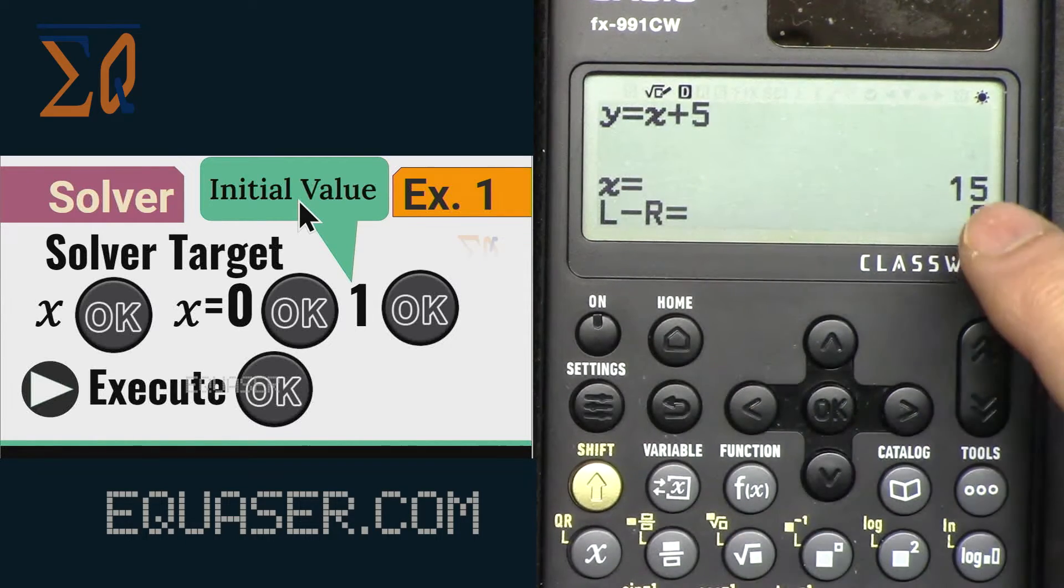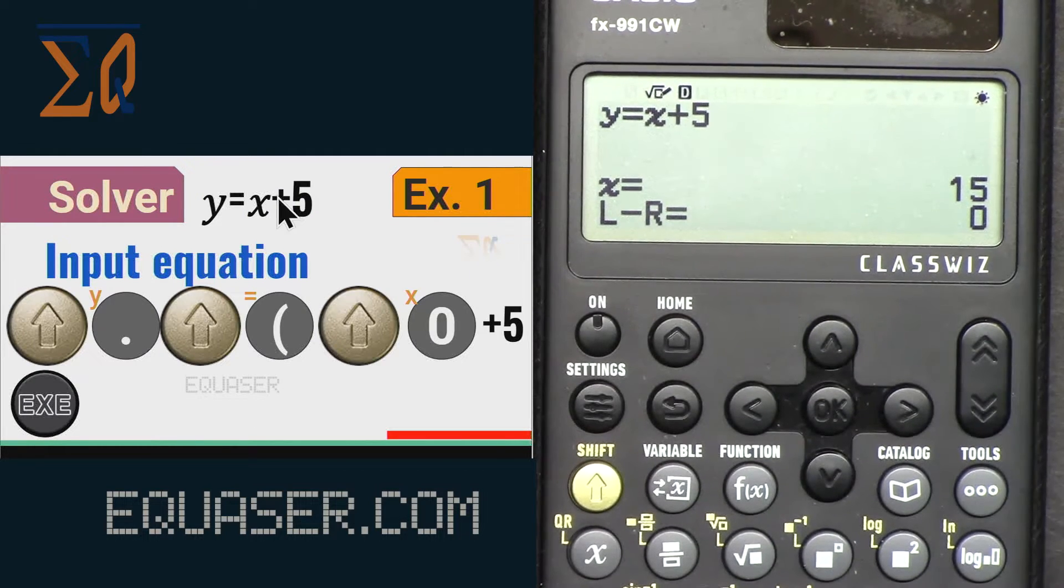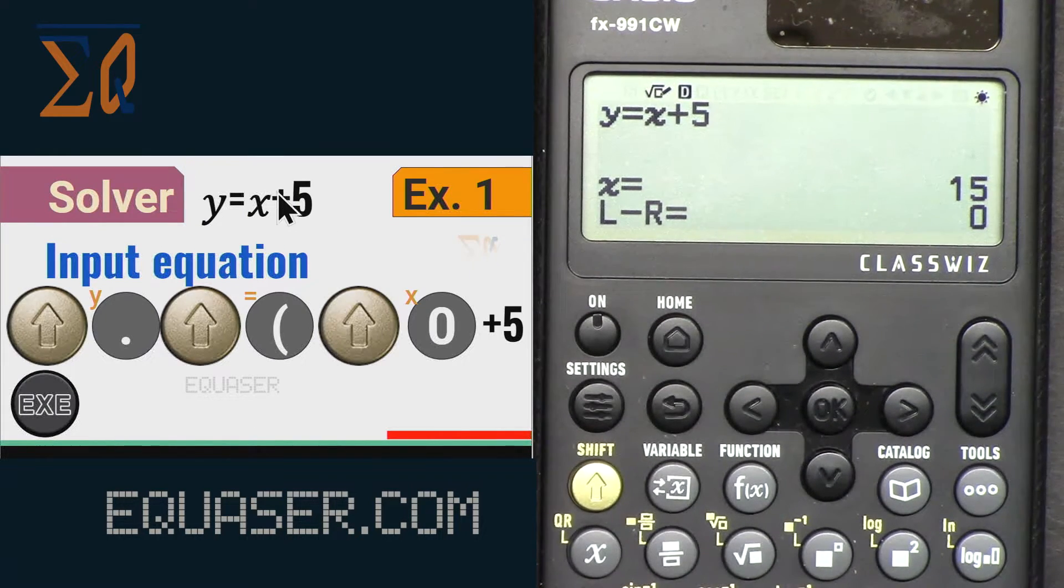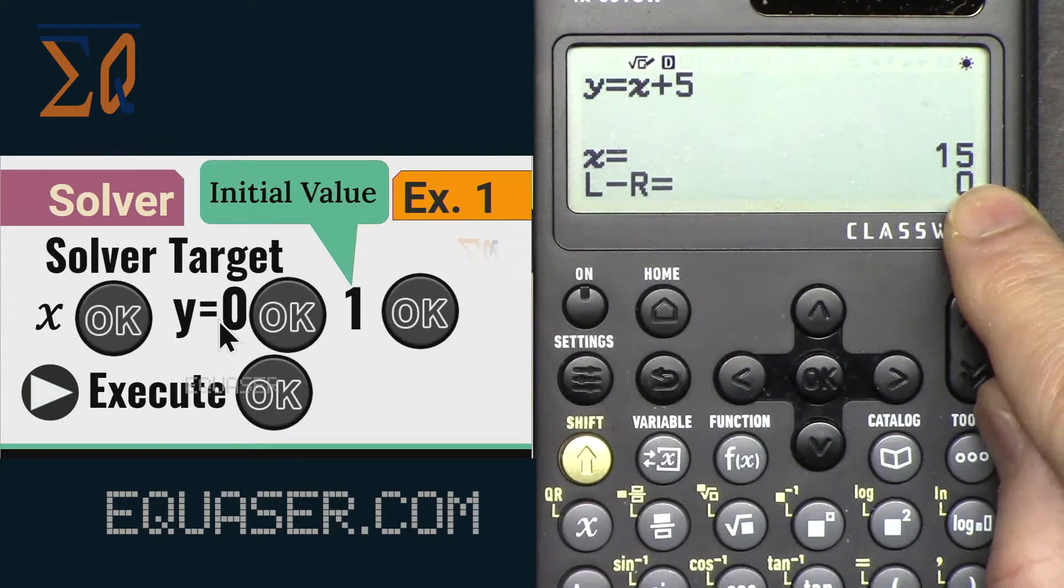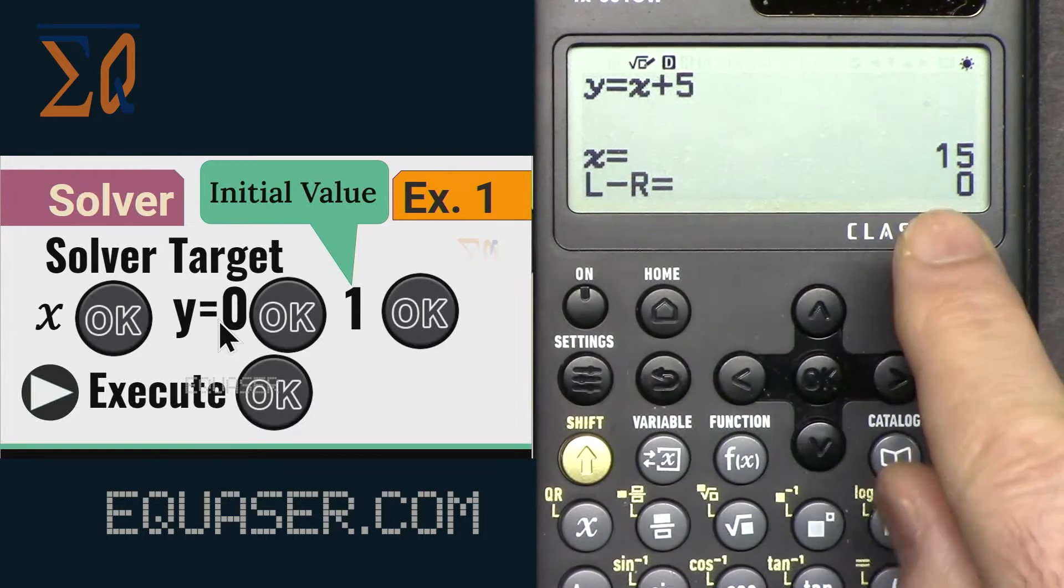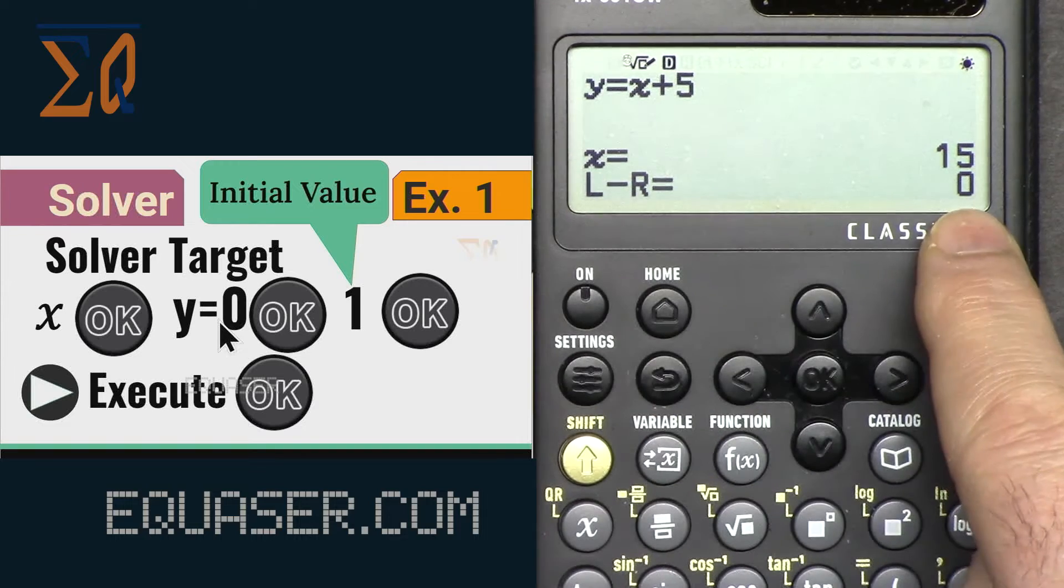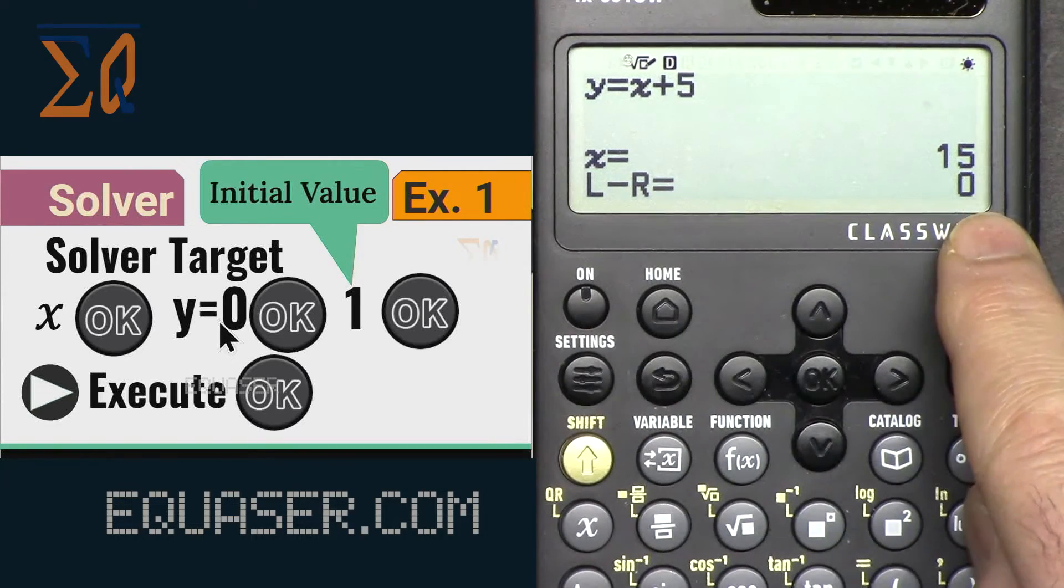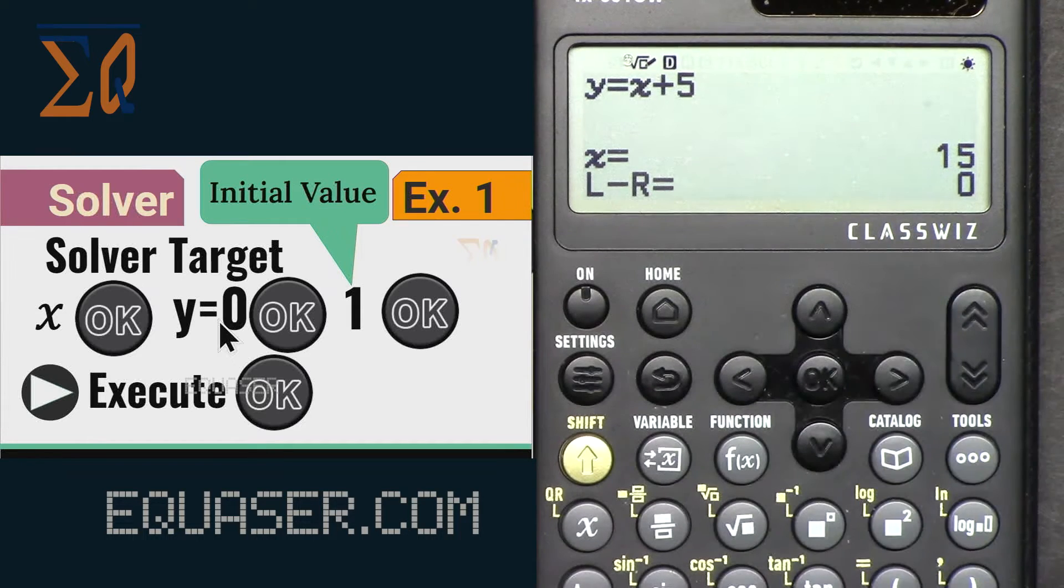Press okay, it solves it, and that is true. If this was 20, this is 5, this must be 15, so the answer is correct. X is 15 which is true. LR means the accuracy. Zero means absolute zero, absolute value. There is no error, but if there is a number that shows the amount of error in your calculation.